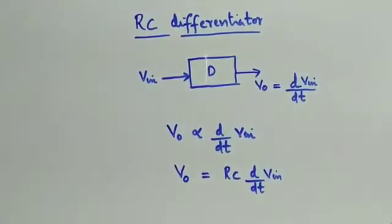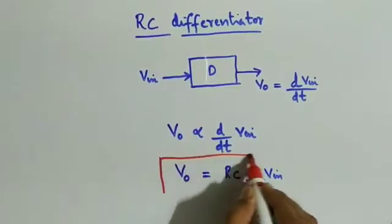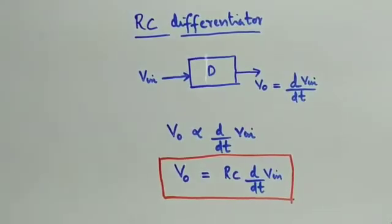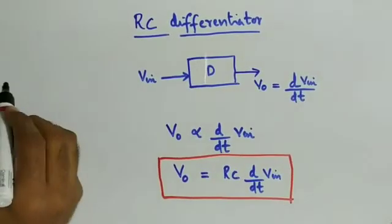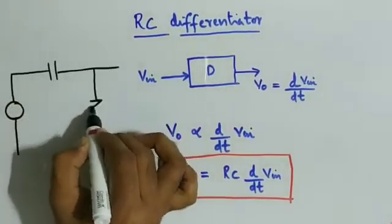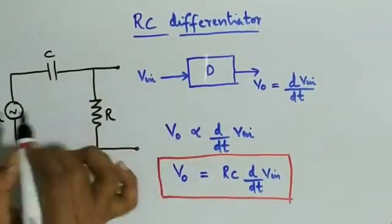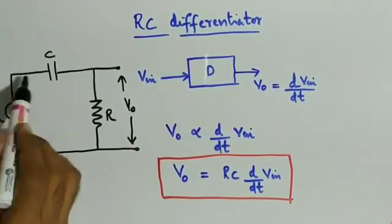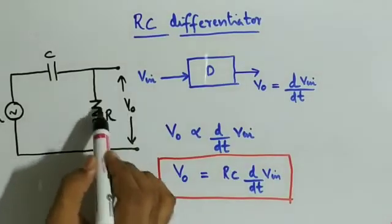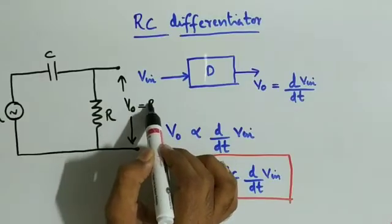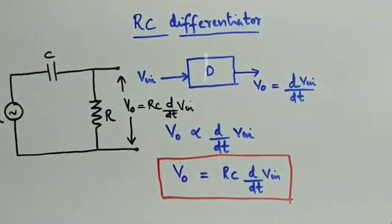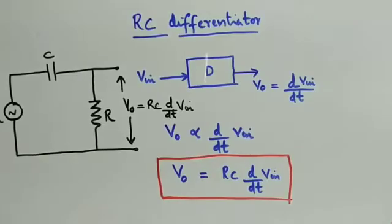This is the differentiator circuit. For the RC differentiator circuit, the output voltage is the derivative of the input voltage. The input signal goes through a capacitor and resistor. For this RC combination, your output voltage is RC into the derivative of the input signal. This is what we will prove. This is the differential mathematical equation.